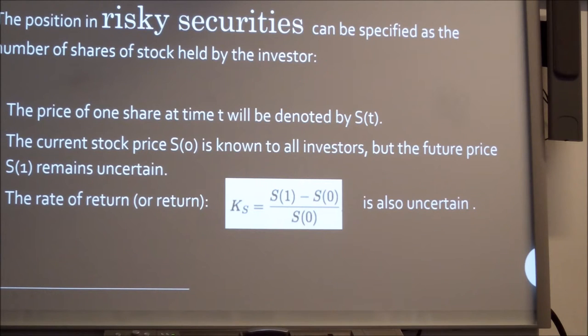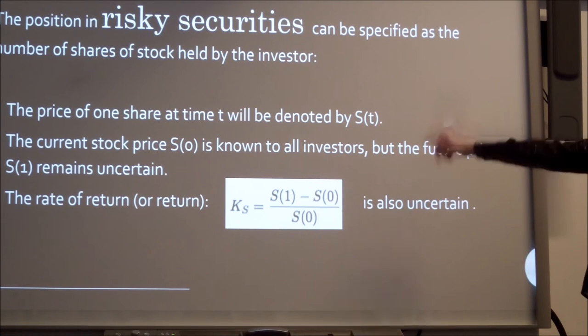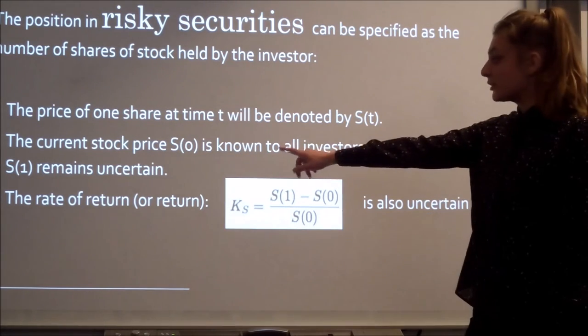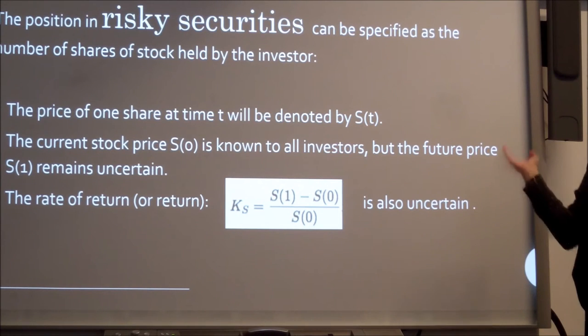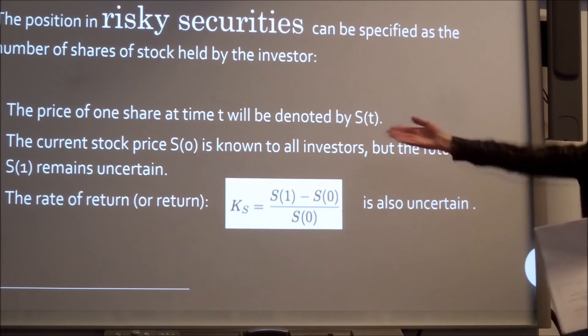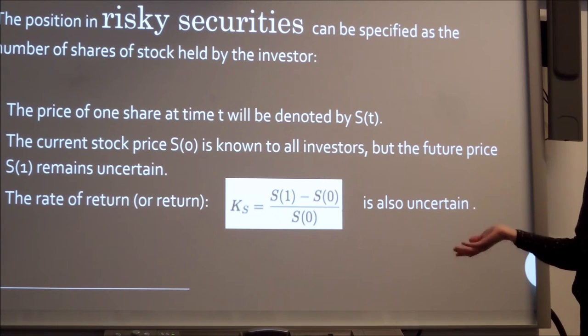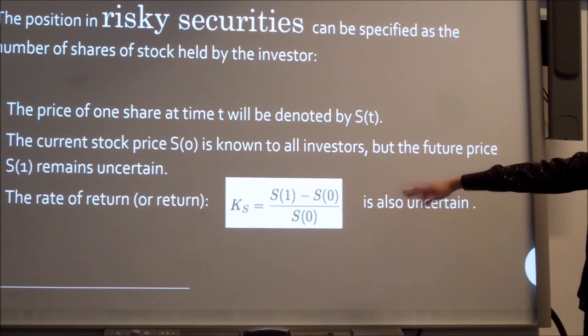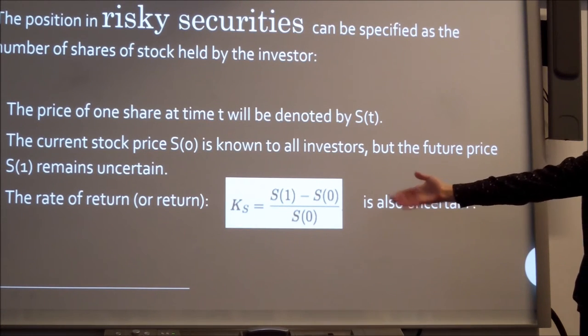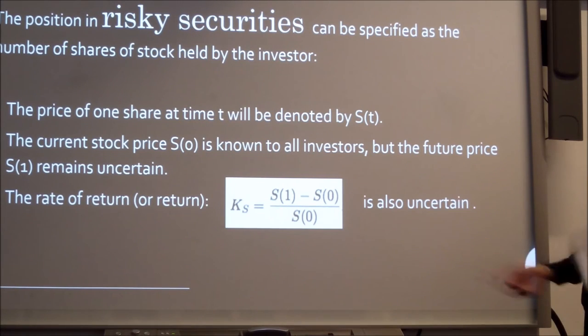The risky securities can be specified as the number of shares of stock held by the investor. We will denote the price of one share at time T as ST, and the stock price S0 is known to all investors. So we know the price of gold today, but the future price S1 of gold tomorrow, after tomorrow, remains uncertain. We can calculate the rate of return, so the rate of return is just how much capital we have generated from our stock by KS equals S1 minus S0 all over S0. And this will obviously be uncertain depending on what the stock price is in the future.